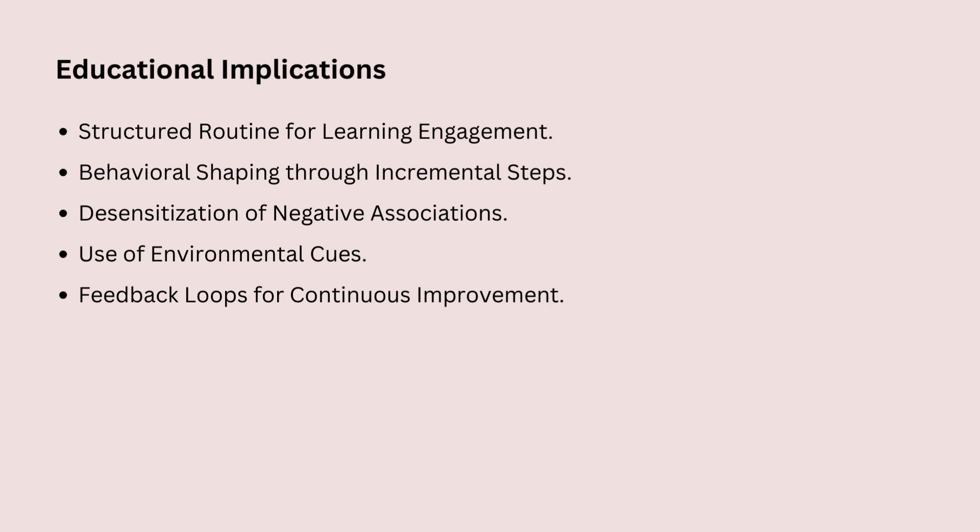Lastly, let us talk about feedback loops. Watson believed in giving immediate responses to behaviors to shape them. In a classroom, this means giving quick and constructive feedback to help students improve continuously. For example, if a student answers a math problem incorrectly, instead of just marking it as wrong and moving on, the teacher could say: 'You got the first step right, but check how you added these numbers in the next step.' This kind of immediate feedback helps the student see what they did well and what they need to fix, reinforcing the right way to approach problems and shaping better learning habits over time.